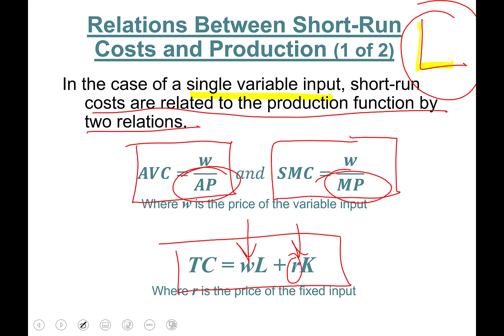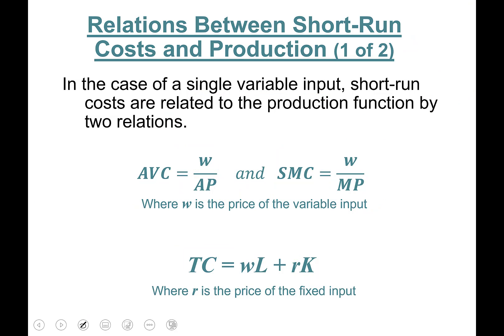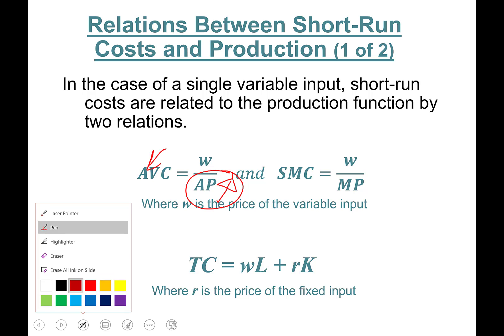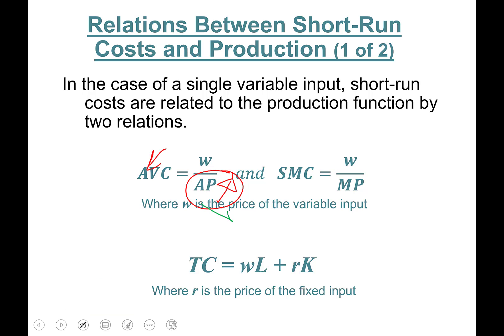Going back to this slide: as you can see, if average product is increasing, something in the denominator is increasing, so average variable cost is going to decrease. If average product is decreasing, then average variable cost is increasing. Using logic and common sense: if average product is increasing, on average the more labor you add, the more they're producing, therefore average variable cost will decline. The opposite is also true — if average product is declining, on average you are getting less output, so average variable cost will go up.